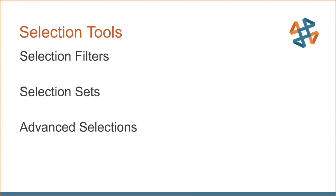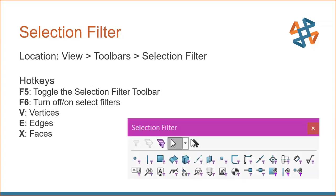Now let's look at selection tools — the selection filter. We'll briefly cover selection sets and then dive into more advanced selections. Let's talk about how to turn that purple funnel off and on intentionally. You can locate it through the View toolbar under Selection Filter, and it also has a hotkey: F5 to toggle that toolbar off and on. This is not one individual tool — there are over 20 tools on this toolbar. We've got vertices, edges, and faces that all have hotkeys, and it's common that these are the hotkeys accidentally pressed that turn your filter on. That X key for faces is right next to the spacebar, so you can accidentally turn on face filtering when trying to reorient your model view.